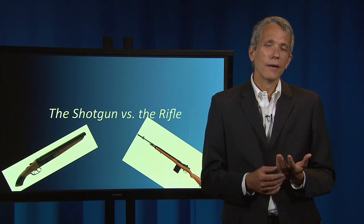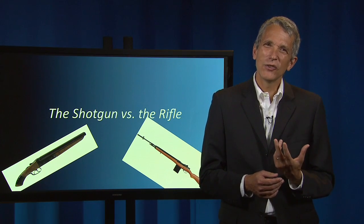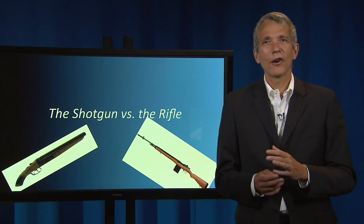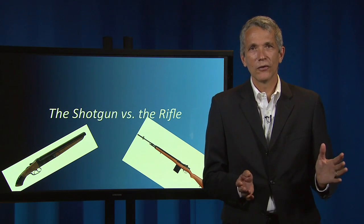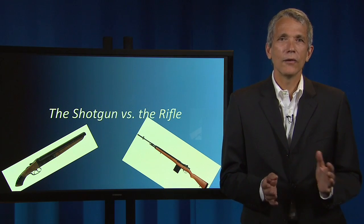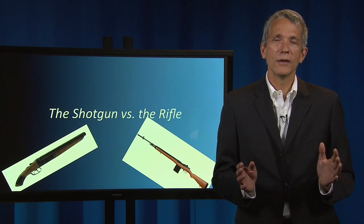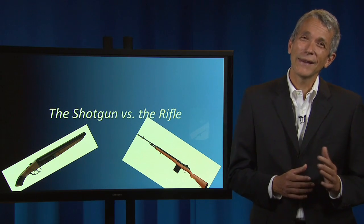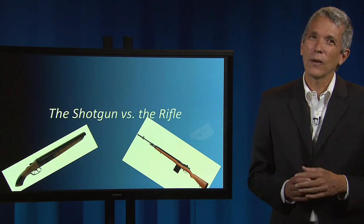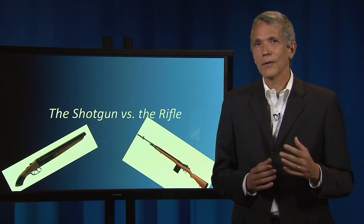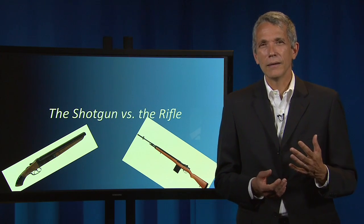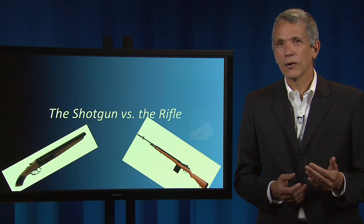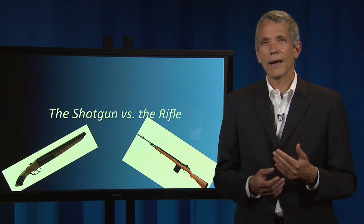The shotgun is preferred when you're less sure about what the professor is looking for. By mentioning a large number of issues, you'll reduce the chance that you screw up and fail to mention an important issue at all. The shotgun strategy is a great way of turning a C or a D grade into a B. But the shotgun approach is not a great way to turn a B grade into an A.